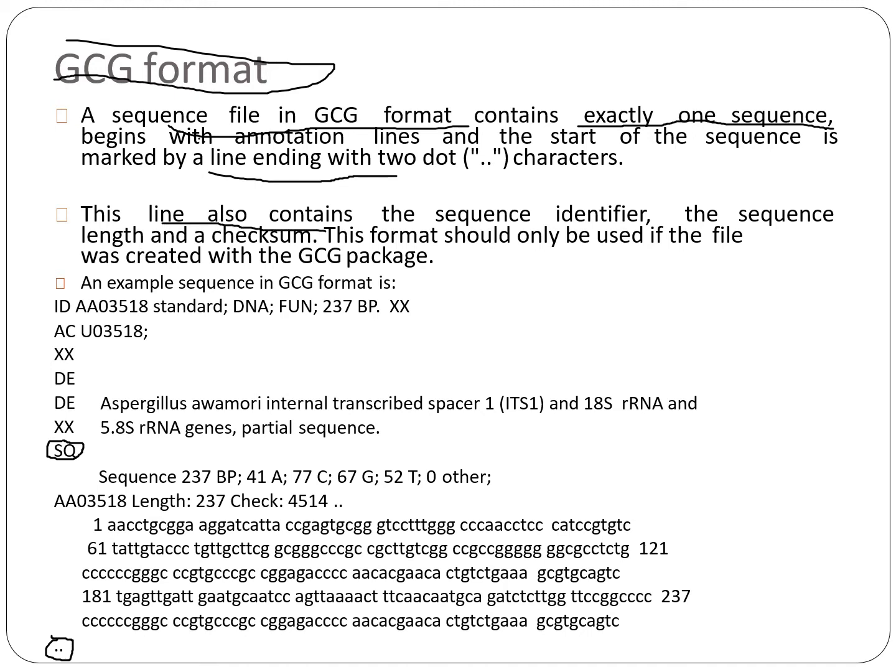This line also contains the sequence identifier, the sequence length, and a checksum. The format should only be used if the file was created with the GCG package. This was the GCG format — it is very much similar to EMBL; the main difference is the ending, which uses two dots.